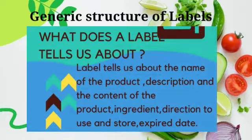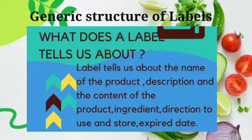What does a Label tell us about? Label tells us about: 1. The name of the product. 2. Description of the content of the product. 3. Ingredients. 4. Direction to use and how to store. 5. Expiry date.